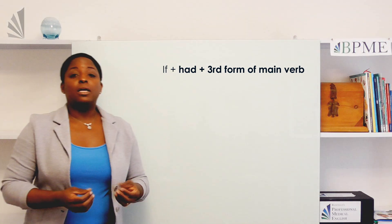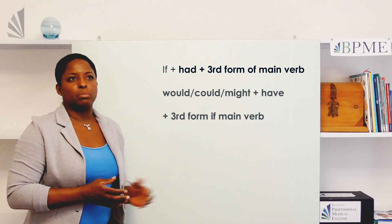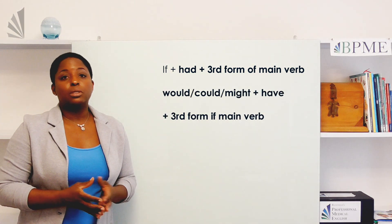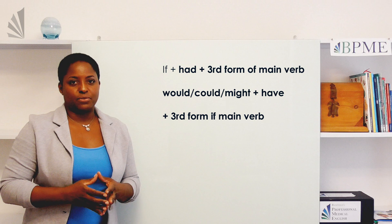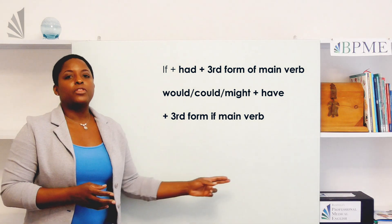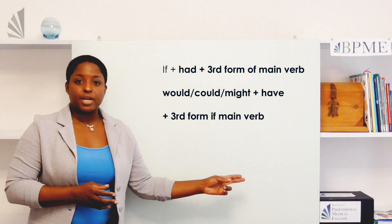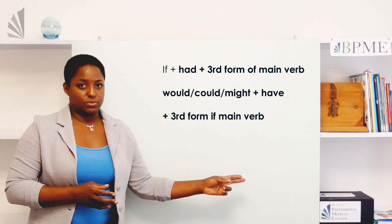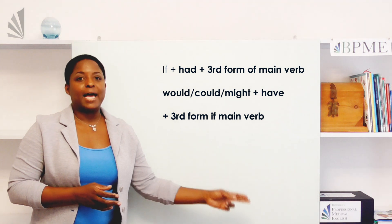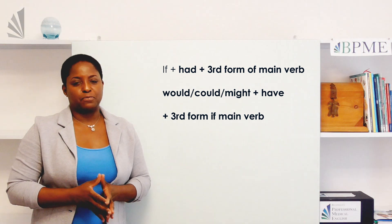In the main clause we use a modal verb — would, could, or might, for example — and the present perfect, which is the present tense of the verb 'have' and the third form of the verb.